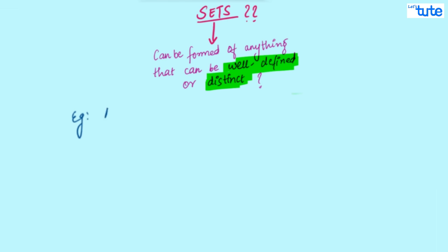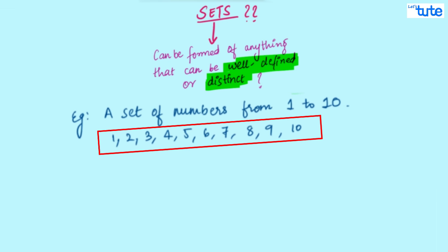Let's take an example. A set of numbers from 1 to 10. Now, this is well-defined. You can list all these numbers also. Right? So, this can be a set.